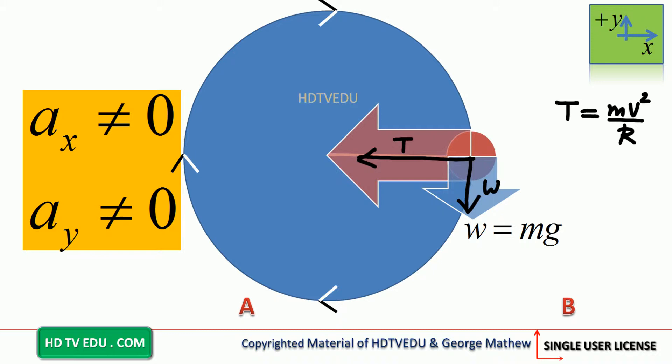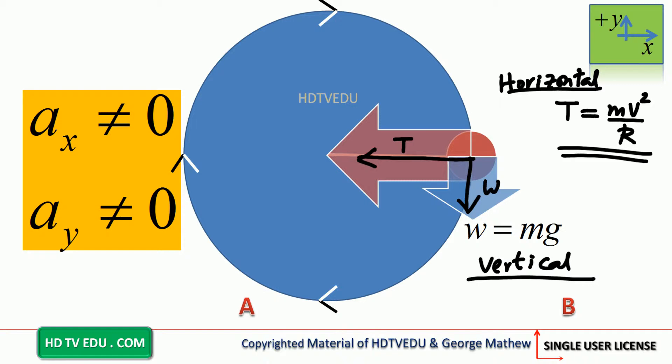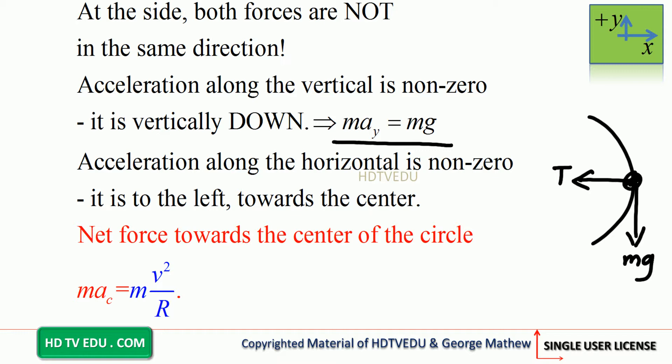It is mv squared over r. Why? Our object is moving in circles. The net force towards the center is equal to m times the square of the speed divided by radius r. So, T equals mv²/r. Along the vertical, gravitational force is the only force, equal to mass times acceleration along the vertical. So, m·ay equals m·g, or ay equals g.